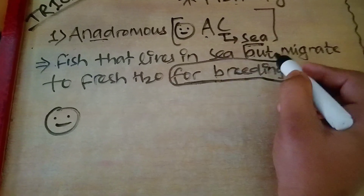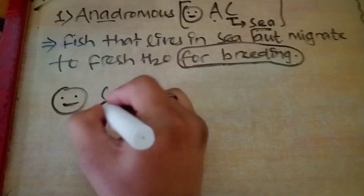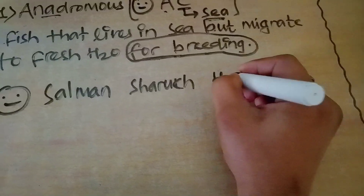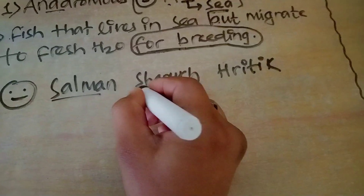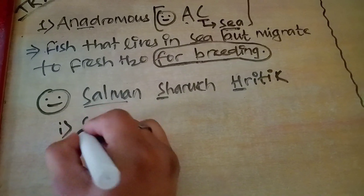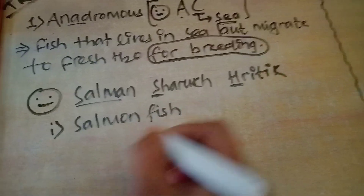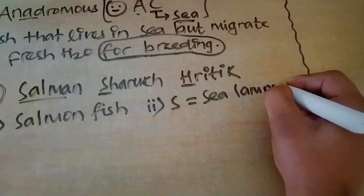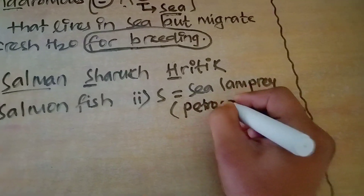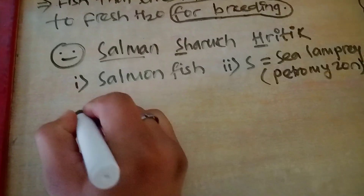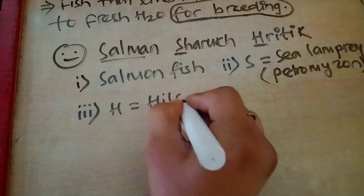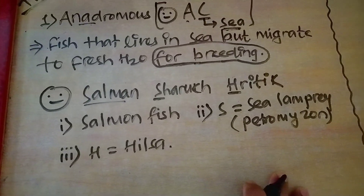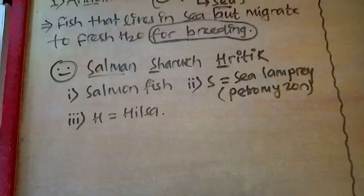So you understand the definition: anadromous fish lives in sea water but migrates to fresh water for breeding. For the examples, use the trick: Salman, Sharukh, Rithik — S, S, R. First we have salmon fish; second, S for sea lamprey (petromyzon); and H for hilsa. So the examples of anadromous are salmon fish, sea lamprey (petromyzon), and hilsa.